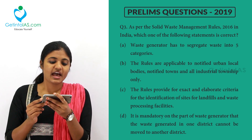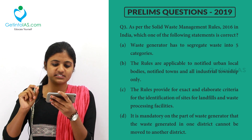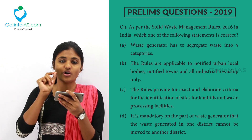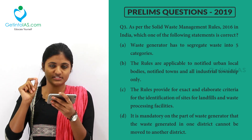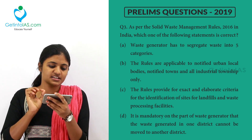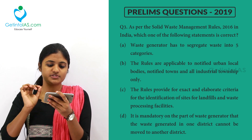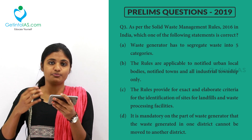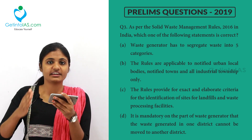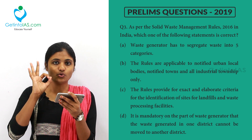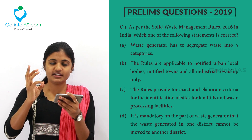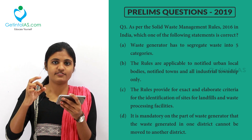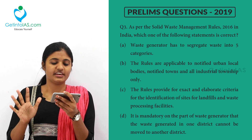Next question: as per the solid waste management rules 2016 in India, which one of the following statements is correct? The first option says the waste generator has to segregate waste into five categories. Do we segregate waste into five categories? No — there are only three categories: wet waste, dry waste, and hazardous waste. So only three categories, not five. Option one is wrong.